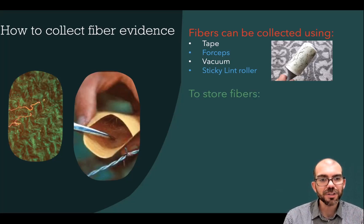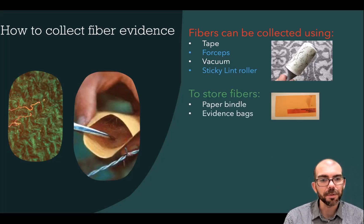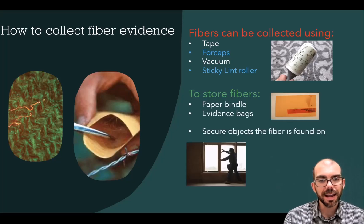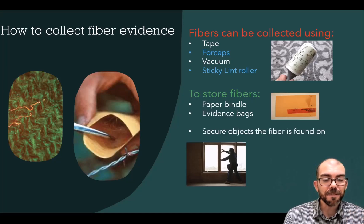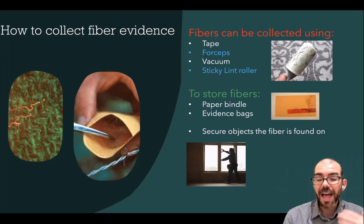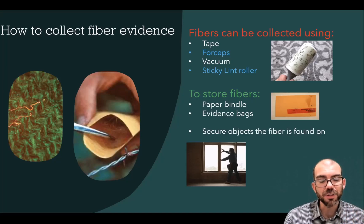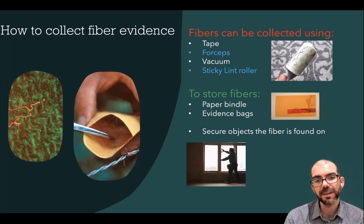To package or store fiber evidence, you can use a paper bindle or an evidence bag. It's also important to secure the object the fiber is found on. If a fiber is found on something like a car door or a window, that can indicate somewhere the suspect has been. So you want to grab that entire piece of evidence in addition to the fiber found on it for further analysis.